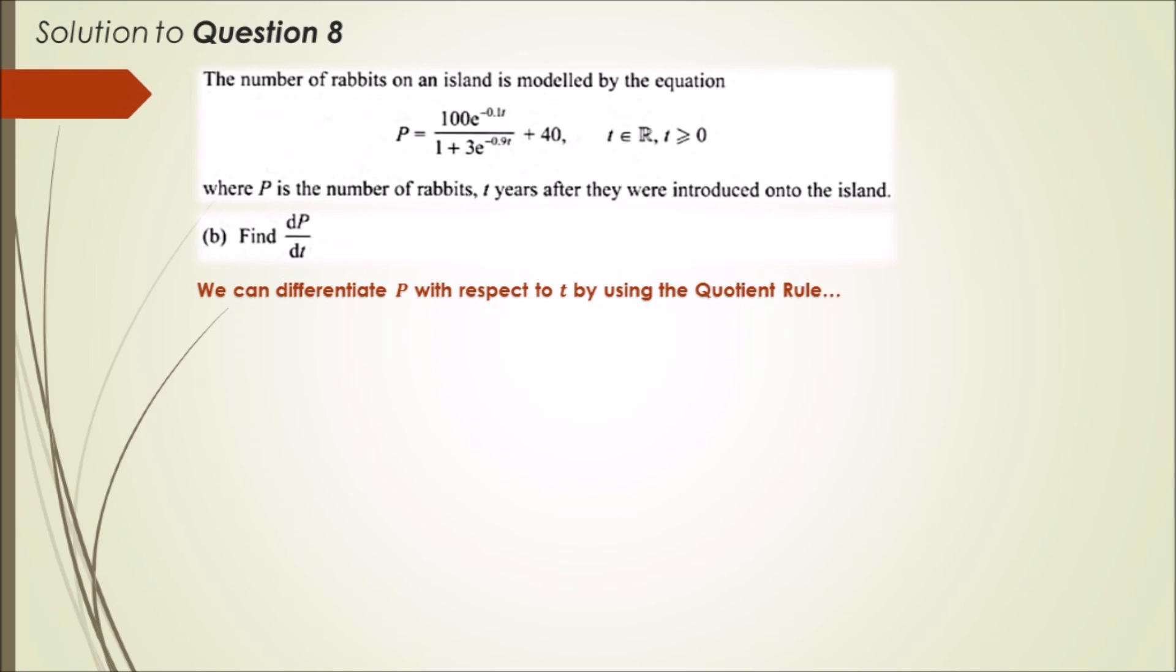If you remember the quotient rule, we need two variables u and v, and it's given by v times the derivative of u minus u times the derivative of v all over v squared. At this stage, we label the top half u and the bottom half v.